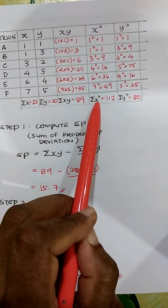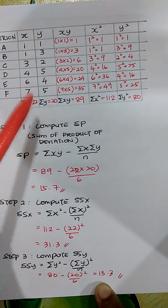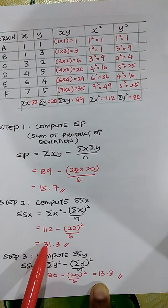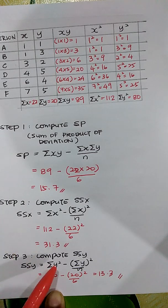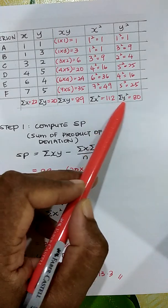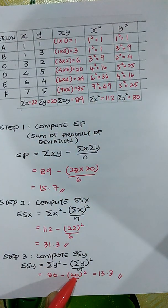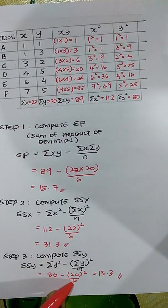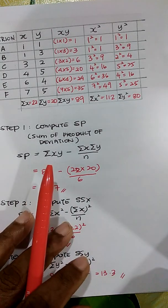Now compute the sum of squares. SS(X) = 112 − (22)²/6 = 31.3. SS(Y) = 80 − (20)²/6 = 13.3.